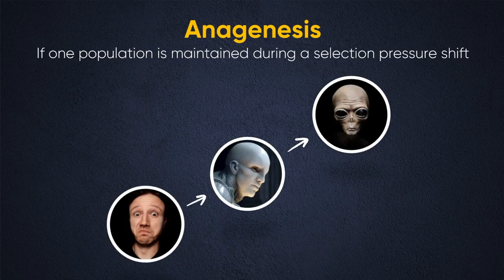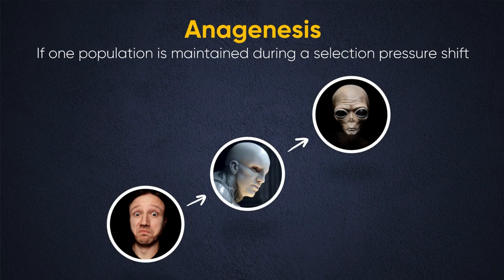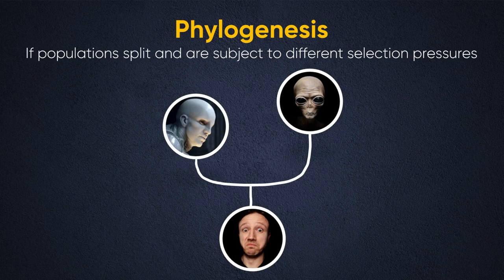So just to recap: anagenesis is when one population, one species, evolves all together into a new species, and the new species replaces the old. Phylogenesis is where you have branching and splitting during evolution. Humans and chimpanzees evolved from a common ancestor through phylogenesis — through a splitting that occurred. This causes a lot of confusion for people new to evolution. They often ask: humans evolved from apes — why are there still apes? Humans should have replaced apes. That thinking assumes a strictly anagenesis model. If strict anagenesis were the norm, there'd only be one species of living thing on Earth. But the most common form of evolution is phylogenesis — there's a branching and splitting that happens. So there you have it: anagenesis versus phylogenesis.